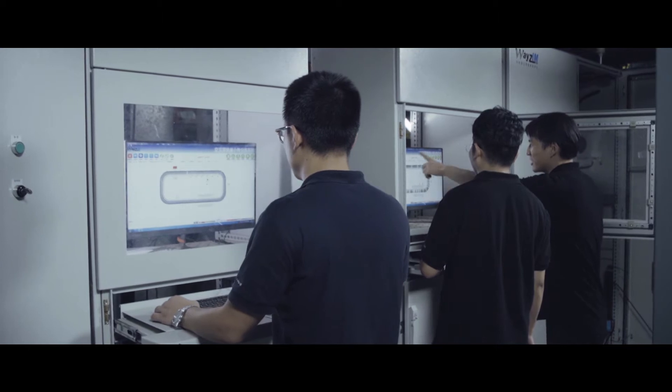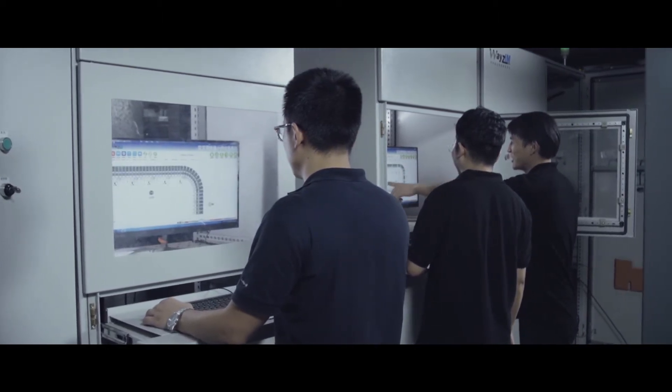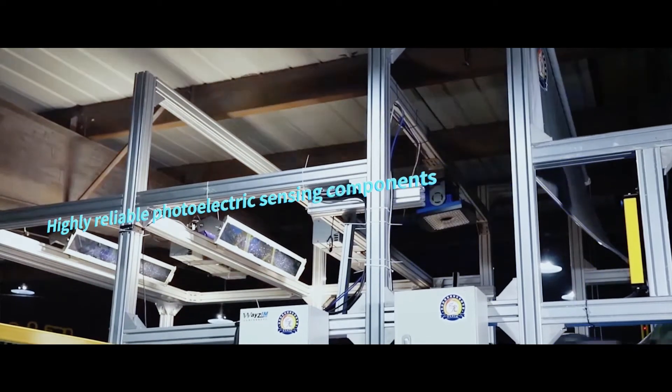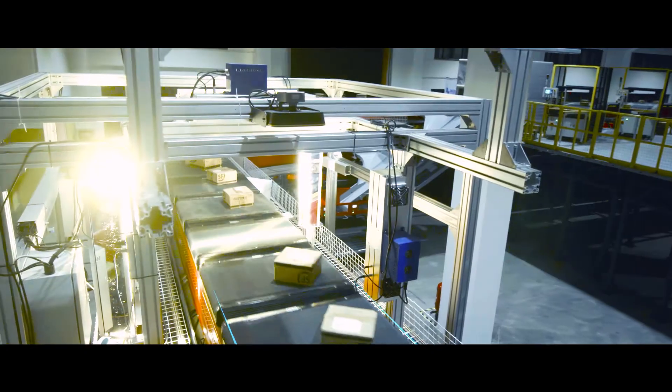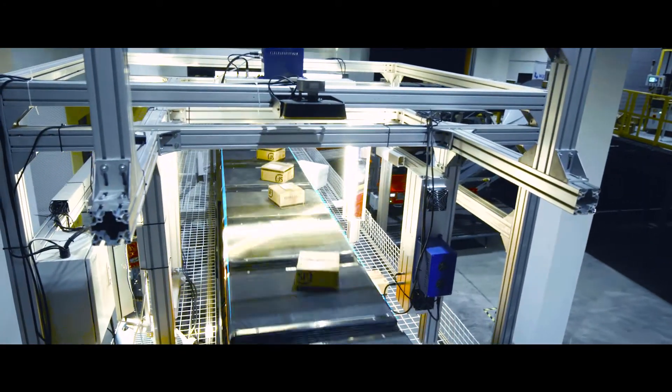The five-sided barcode reading system scans five sides of the parcel to read the barcode information, which can level up system automation.